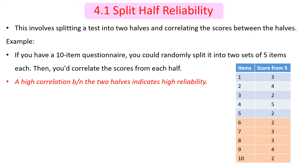In split-half reliability, this involves splitting a test into two halves after collecting the scores or results — by taking the odd-numbered and even-numbered items, or by dividing the items in half. Correlating the scores between the two halves indicates the split-half reliability.